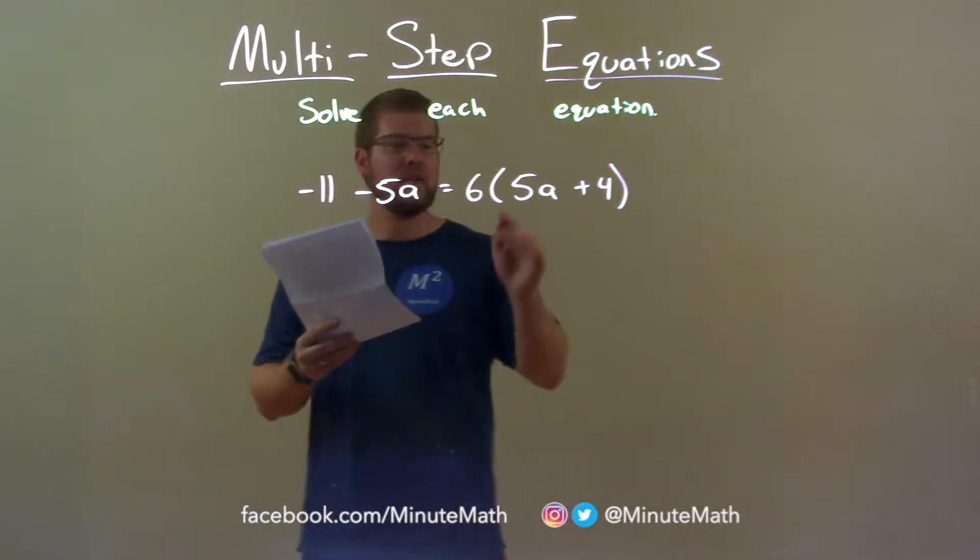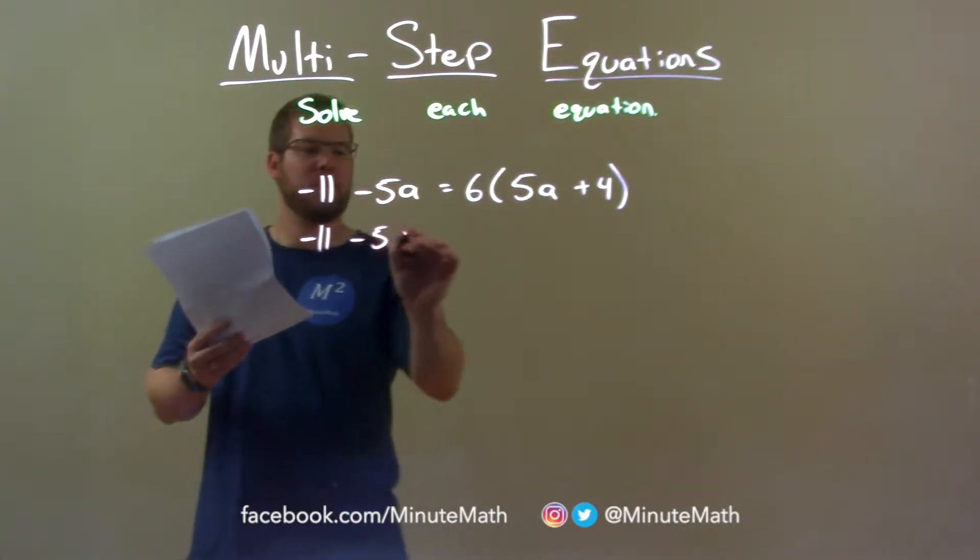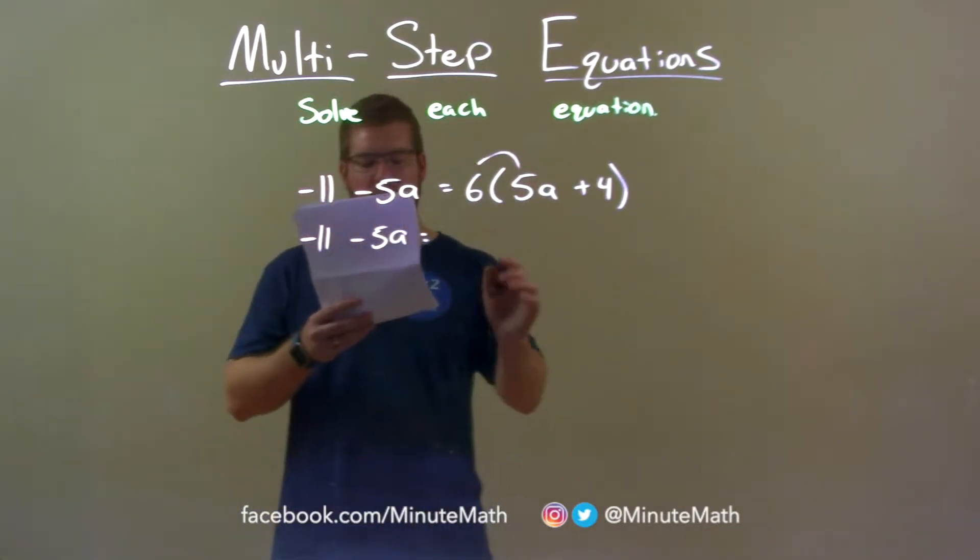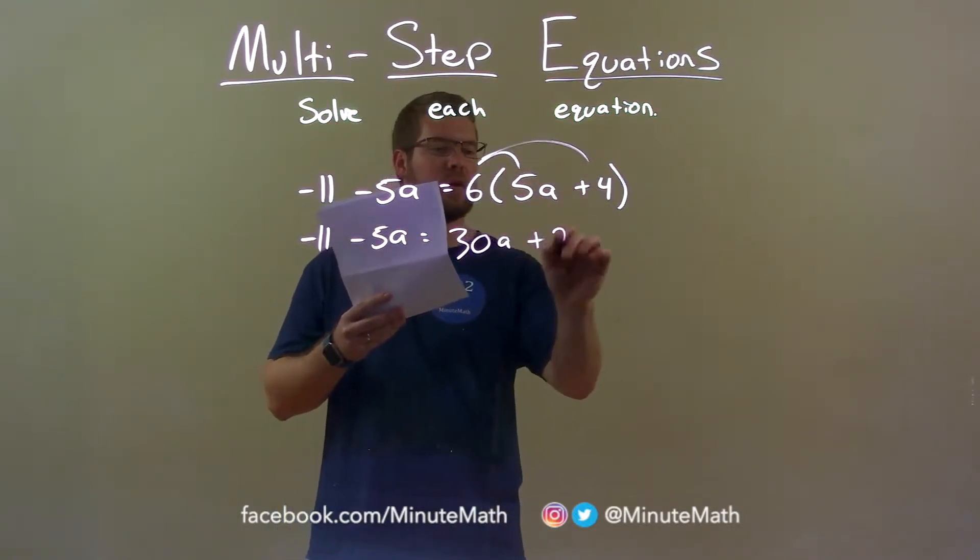First step in doing that is I distribute the 6 in the parentheses. So on the left-hand side, negative 11 minus 5a stays where it is. 6 times 5a is 30a, and 6 times 4 is 24.